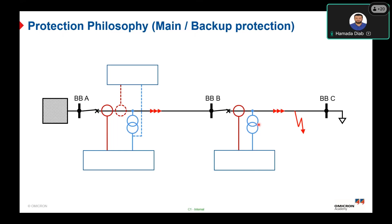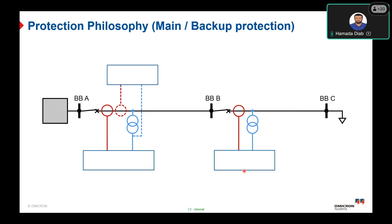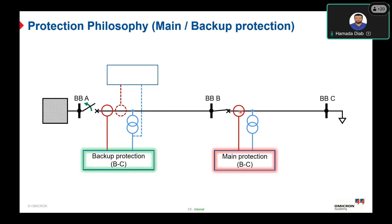As another example, if a fault occurs between line P and line C, the main protection of lines P and C takes CT and VT measurements from the primary side, issues a trip signal, and trips circuit breaker P to isolate the fault. If this main protection fails, the main protection of the A-to-B section will act as backup protection for P-to-C faults after a time delay — represented by zones Z2 or Z3 in distance protection — tripping after approximately 400 ms. This demonstrates the main protection philosophy and how to achieve redundancy in your protection system.